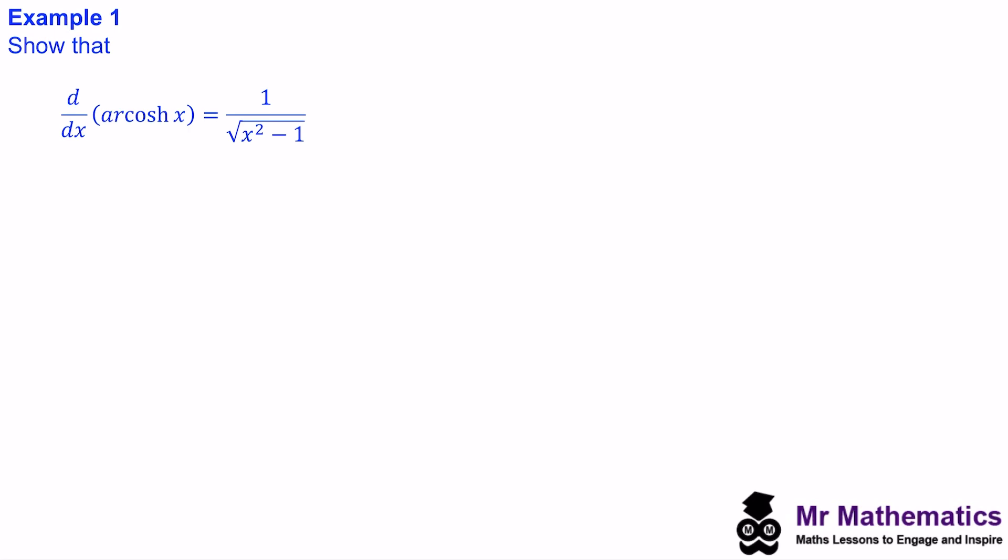So in question one, we've been asked to show that the derivative of arcosh x with respect to x is equal to 1 over the square root of x squared minus 1. So the first thing we need to do is we need to say let y equal arcosh x.